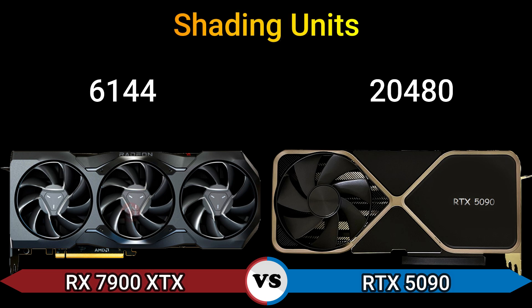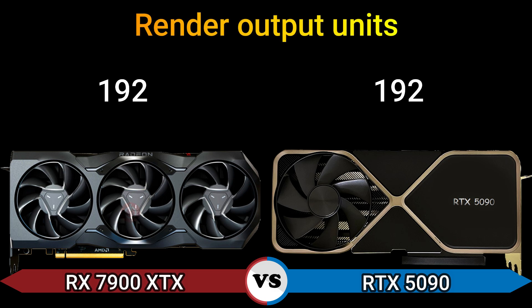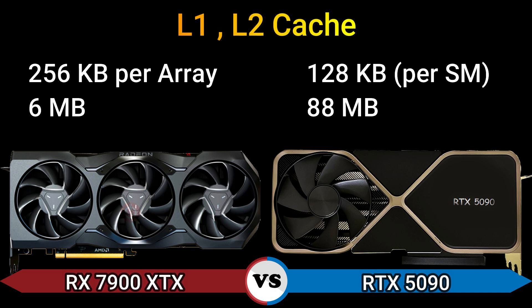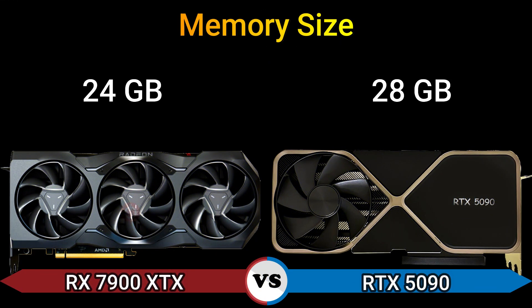Shading units: 6144 and 2480. Texture mapping units: 384 and 640. Render output units: 192. L1/L2 cache: 256 KB power away 6 MB and 128 KB, partition 88 MB. Part 2 — Memory.